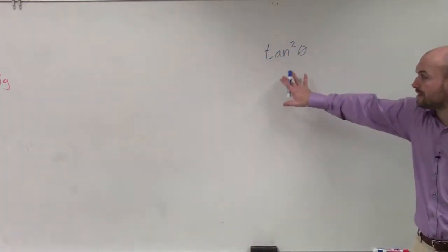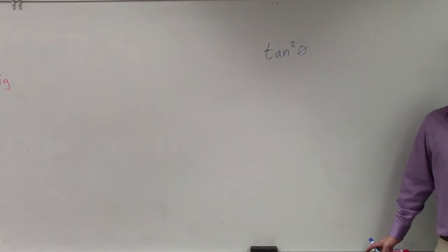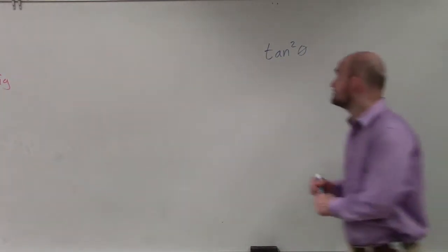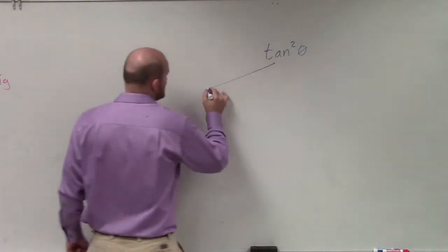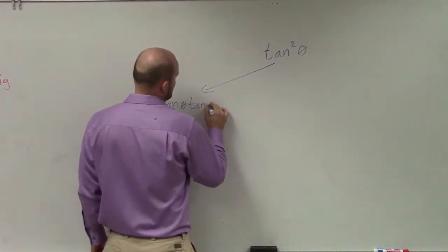Megan, what is one way I can transform tangent squared based on those identities that I had? What's one way I can rewrite tangent squared? Tangent times tangent. I could write it as tangent times tangent. That's actually not using one of my identities, but that actually works. Tangent of theta times tangent of theta.